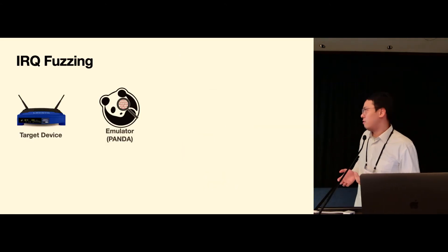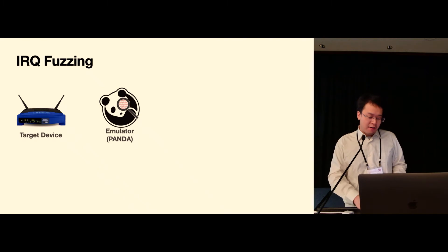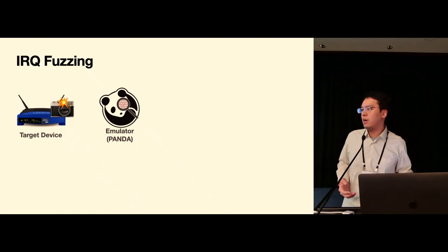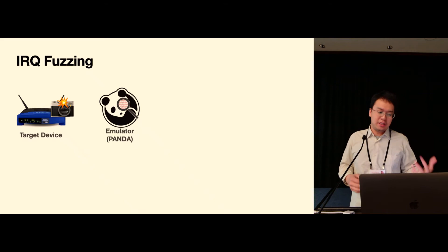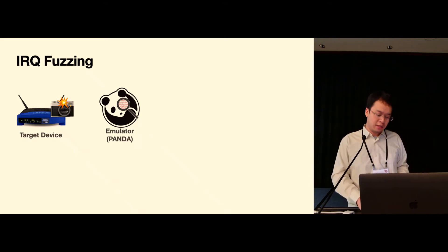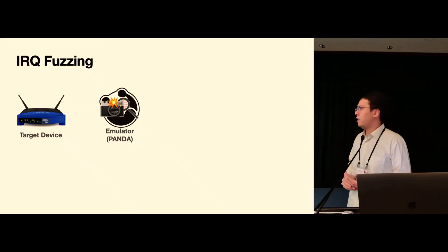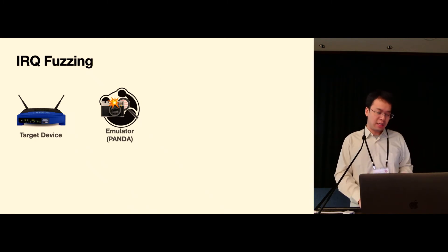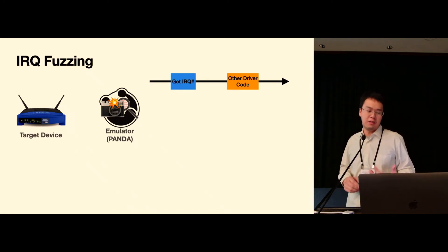So here's how IRQ fuzzing works. First we take a snapshot from the target device with its memory dump and CPU registers, and we load it up in our emulator which is PANDA in our case, so that we can continue the execution and raise an IRQ exception so that we can start exploring the interrupt handling code.